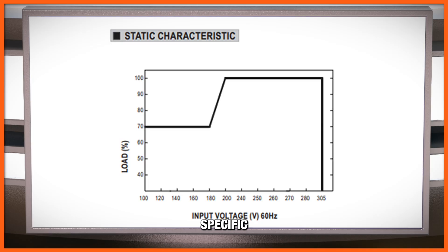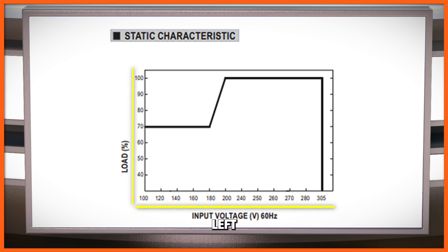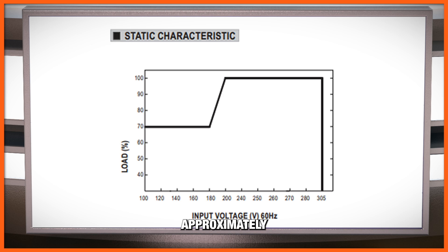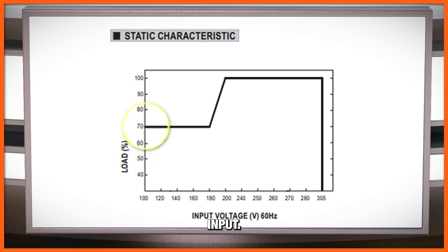In this graph for a specific LED driver, the input voltage you are using is on the x-axis at the bottom and the maximum load percentage is on the y-axis on the left. You can see that when the input voltage to the driver is at 110 or 120 volts AC — this is known as low line — the load percentage shown tells you that you should limit your output to 70% of the maximum output power. That means for approximately 100 watts, your output should not be more than 70 watts using the low line input.